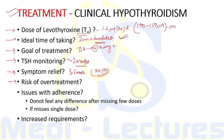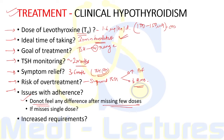Over-treatment is associated with suppressed TSH levels, which makes patients prone to increased risk of atrial fibrillation and decreased bone mineral density, so TSH must be kept in the normal range. There are adherence issues because patients do not feel any difference after missing a few doses. If someone has missed a single dose of levothyroxine, they can be advised to take two doses at once on the next day.